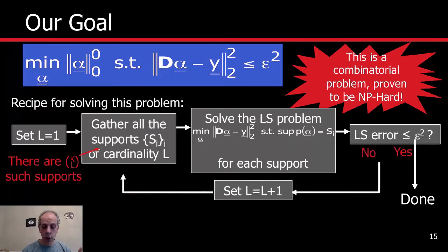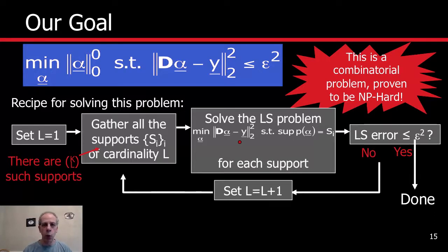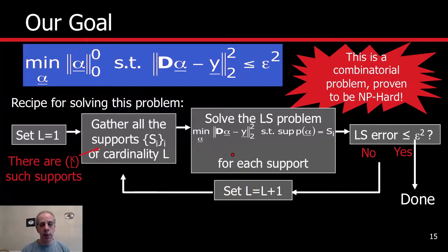If the error is not small enough, we increase the support. We just tried L equal to 1; now let's try L equal to 2. We pick all possible supports with two active, non-zero coefficients — every possible pair. For example, can I approximate signal y with the first and second atom, or the first and third, or the seventh and 25th? There are 2-choose-K combinations, on the order of K-squared. We try all of them, solving each as a least-squares projection onto the subspace generated by the selected atoms.